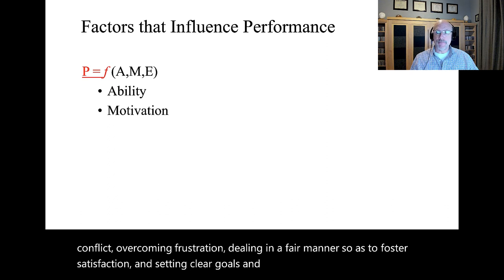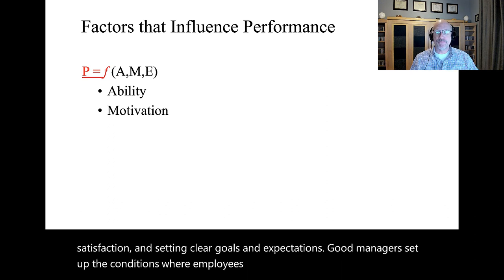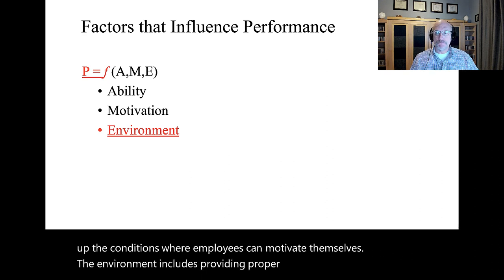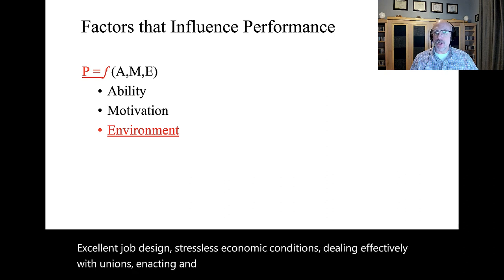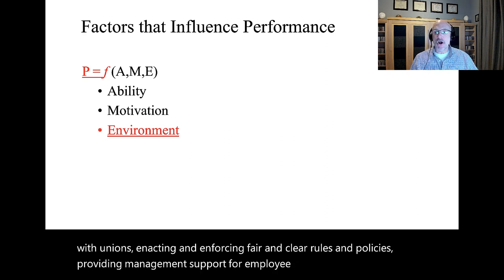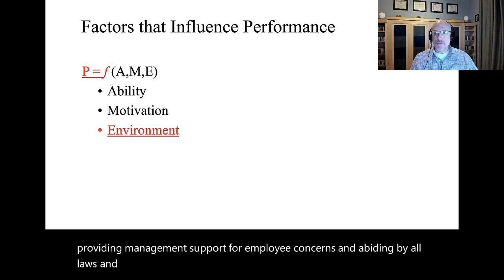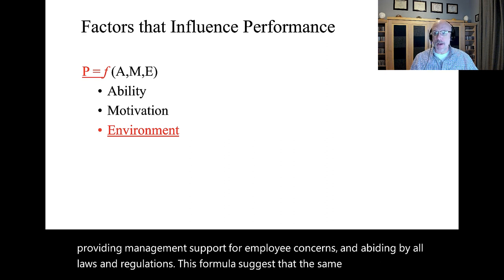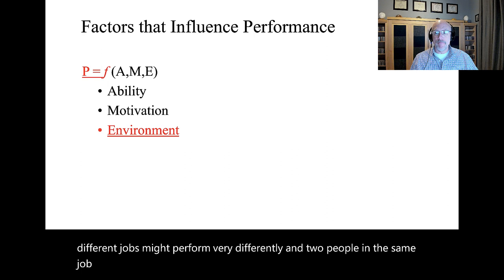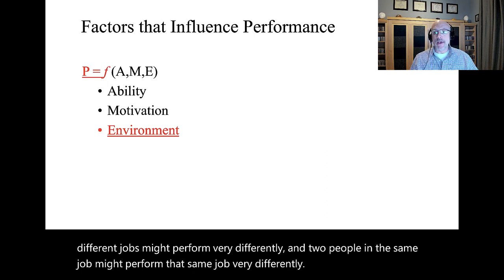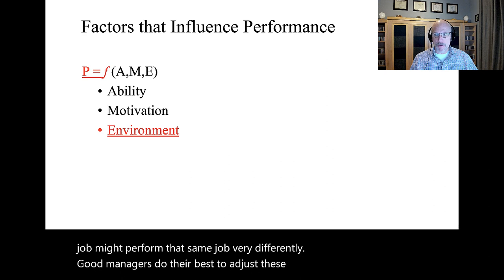Good managers set up the conditions where employees can motivate themselves. The environment includes providing proper equipment and materials, excellent job design, stressless economic conditions, dealing effectively with unions, enacting and enforcing fair and clear rules and policies, providing management support for employee concerns, and abiding by all laws and regulations. This formula suggests that the same person in two different jobs might perform very differently, and two people in the same job might perform that same job very differently. Good managers do their best to adjust these variables to get optimum performance from their employees.